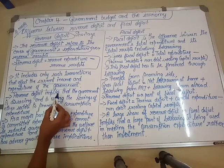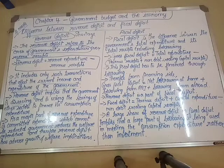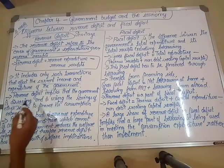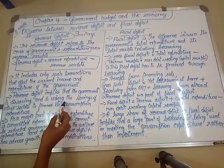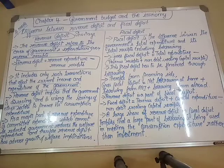Revenue deficit implies that the government is dis-saving. Dis-saving means the government is not saving. As in my example, I had to save 200 rupees but I saved only 100 — which means I dis-saved. Revenue deficit implies that the government is dis-saving and using the savings of other sectors to finance its consumption expenditure. The government uses money from other sectors to meet its consumption expenditure.